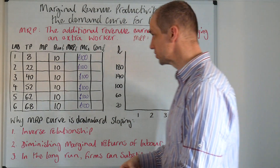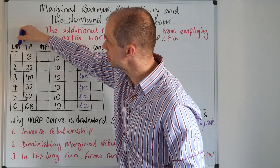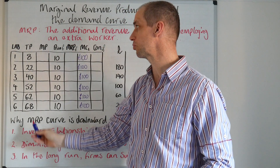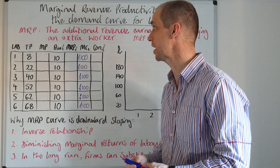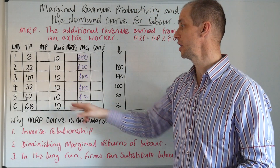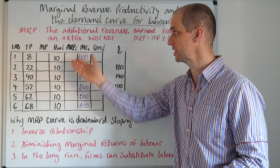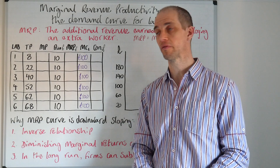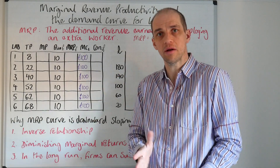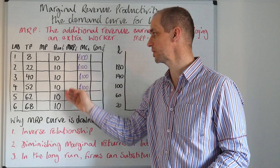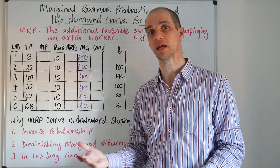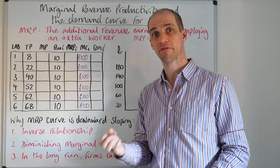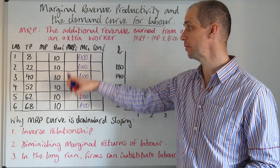In this table you can see I've put down a number of labourers going from one through to six, total product from eight through to 68, and then a price which is remaining constant at £10. This good is clearly in a perfectly competitive market. We know that because it's a perfectly elastic or horizontal demand curve facing the firm, and therefore the price for the firm does not change — it remains constant at £10.